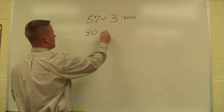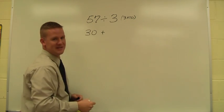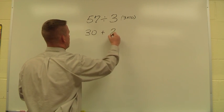Then I think what plus 30 gives me 57? What piece is missing? So it's 30 plus 27.